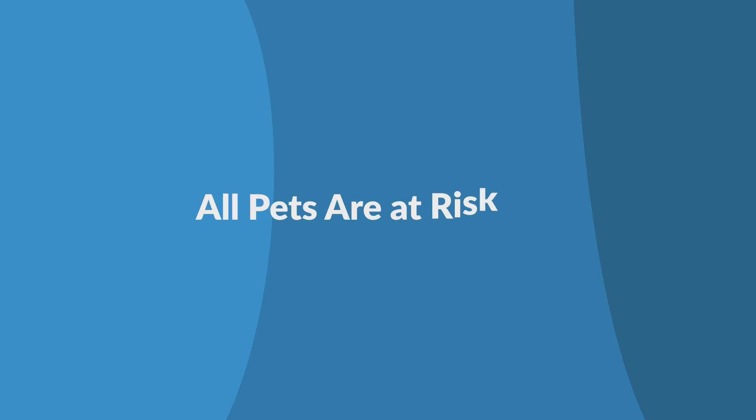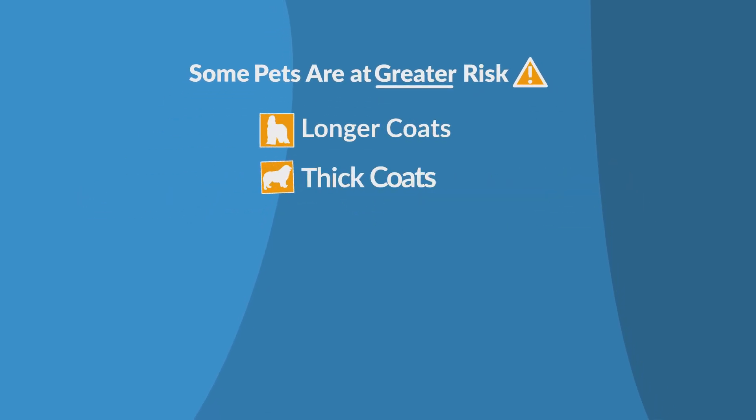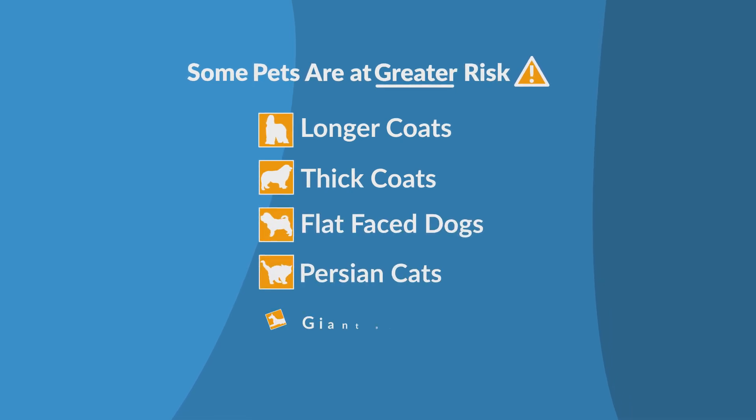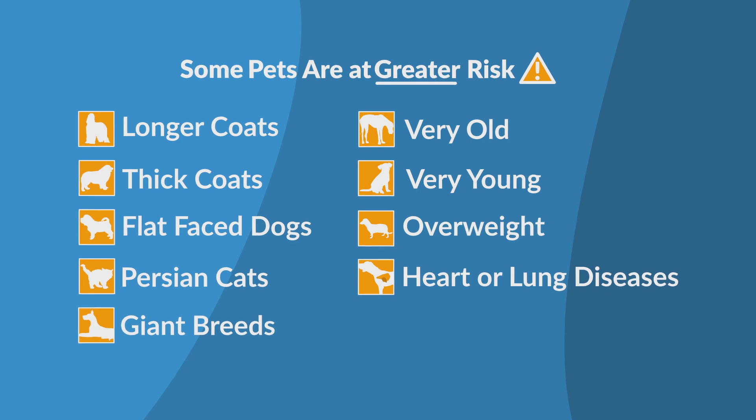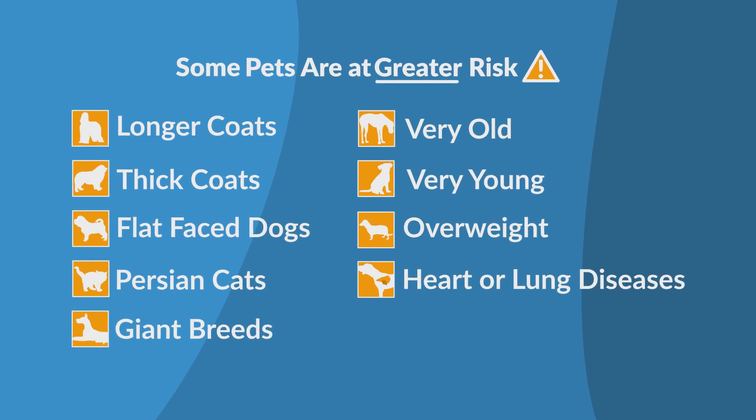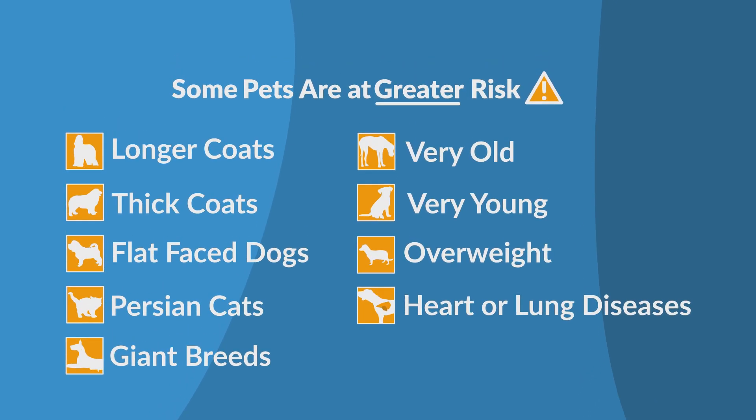While all pets are at risk for heatstroke and dehydration, some pets are at greater risk due to the thickness or length of their coat, their breed, and any health conditions that make temperature regulation difficult. If your pet meets any of these criteria, be especially careful.